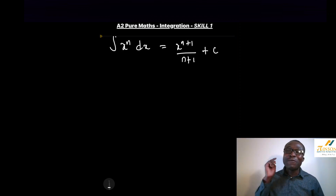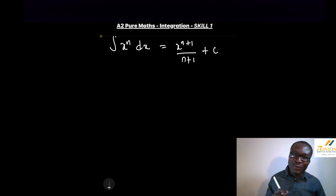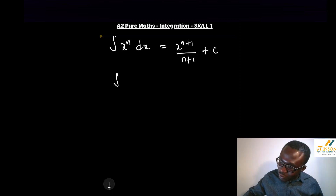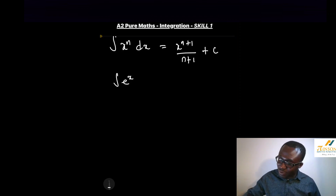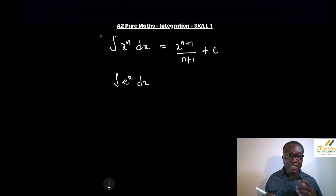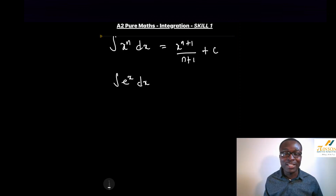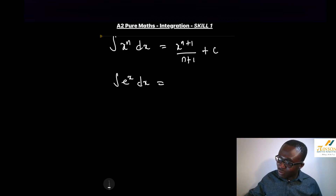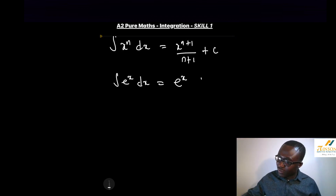The next standard to know: when we differentiate e to the x with respect to x, we get the same. The gradient of e to the x is e to the x. Therefore, by standard, when we integrate it, we get the same thing. And don't forget to add your C. This is very important.